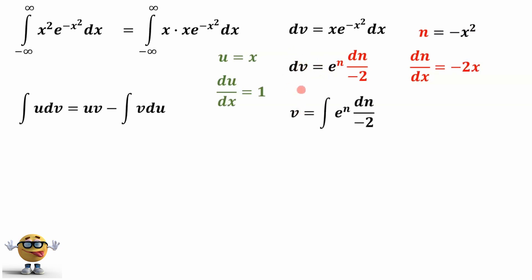The v, if we take the integral of both sides, the integral of this, the integral of e to the n is our friend. It's just e to the n, itself, it doesn't change. And this 1 over negative 2 is the same as negative 1 over 2, it just comes along for the ride. Now we don't care about n, we care about x. So we'll substitute back what n is. N is negative x squared. And now we have everything we need for integration by parts.